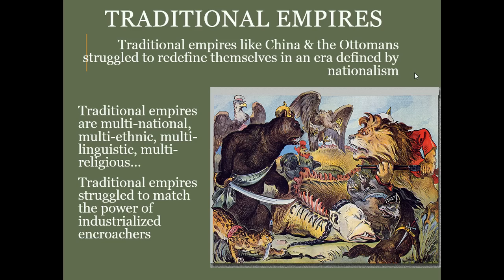Traditional empires like China and the Ottomans are going to struggle to redefine themselves in a highly nationalistic era. Here's a famous cartoon: China is depicted as a dragon, Japan has a samurai sword, a huge bear symbolizes Russia, the lion is Britain, the rooster is France, an eagle is Germany, and the bald eagle with a stars-and-stripes sash is the United States. They are all swarming over this dead carcass of a nation, each trying to pick off a piece for themselves.